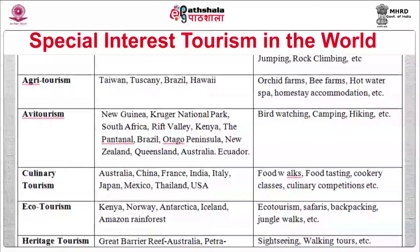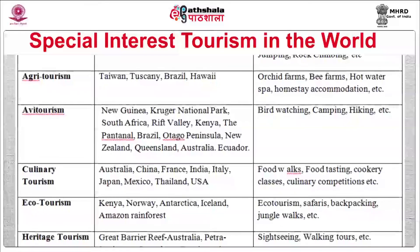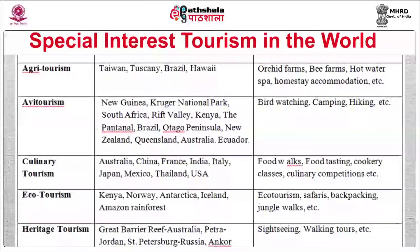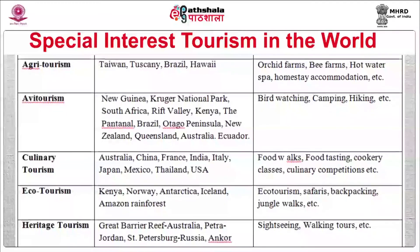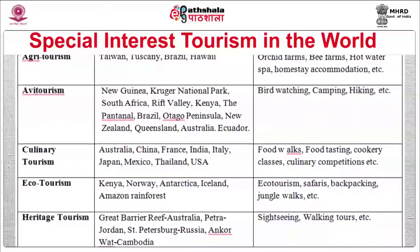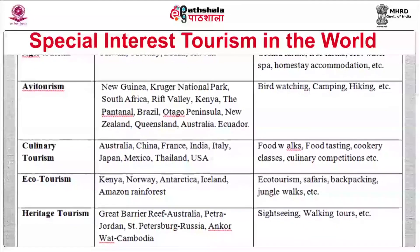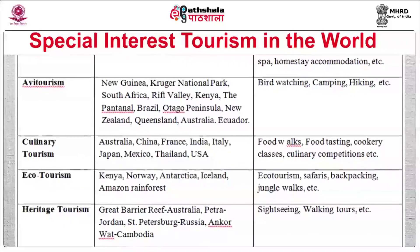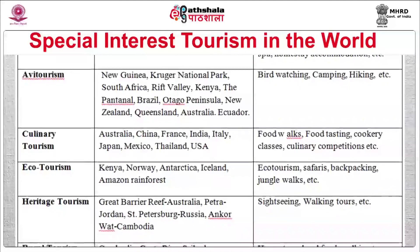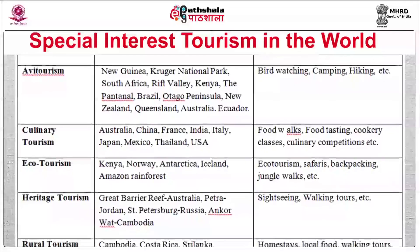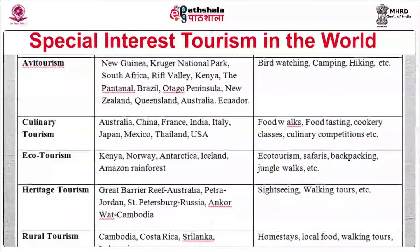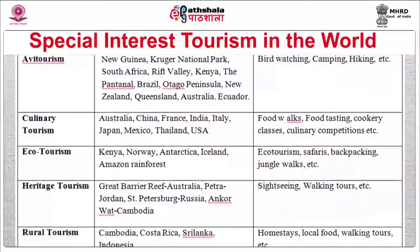For culinary tourism worldwide, famous countries include Australia, China, France, India, Italy, Japan, Mexico, Thailand, and the USA, with activities such as food walks, food tasting, cookery classes, and culinary competitions. For ecotourism, popular destinations are Kenya, Norway, Antarctica, Iceland, and the Amazon rainforest.